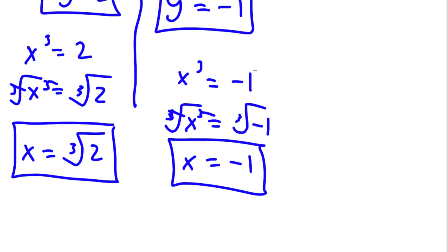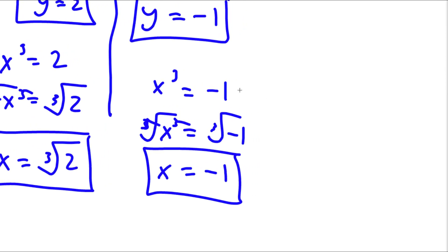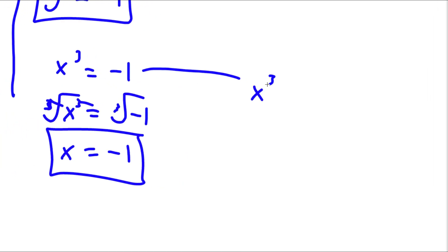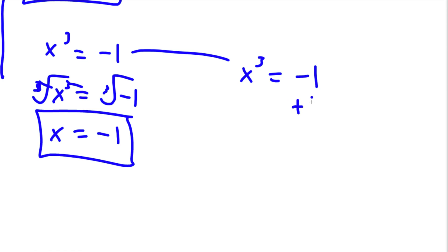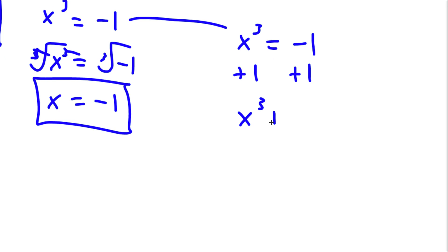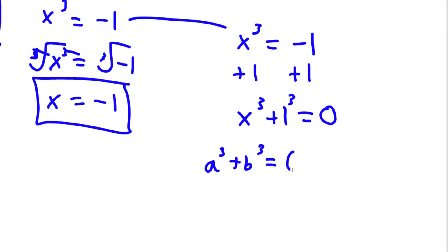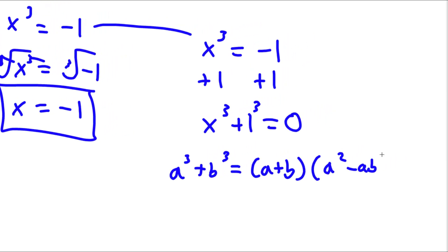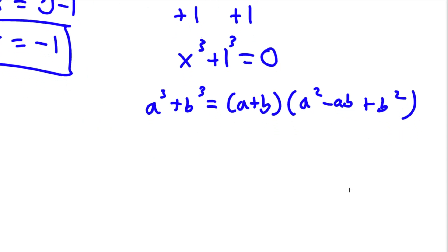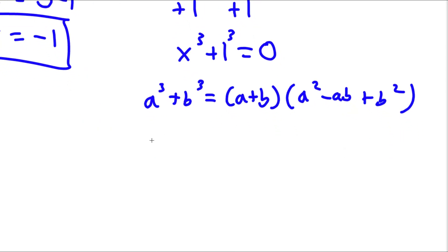Now we are not actually done yet because if x to the power of 3 equals negative 1, we can actually find another solution. So if x to the power of 3 is equal to negative 1, I'm going to first start by adding 1 on both sides. So now I have x to the power of 3 plus 1 is equal to 0. Now 1 here is the same thing as 1 to the power of 3. And if I have something in the form a cubed plus b cubed, this is equal to a plus b times a squared minus ab plus b squared. So x cubed plus 1 cubed equals x plus 1 times x squared minus x plus 1.